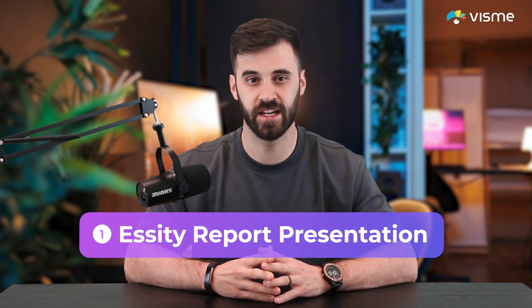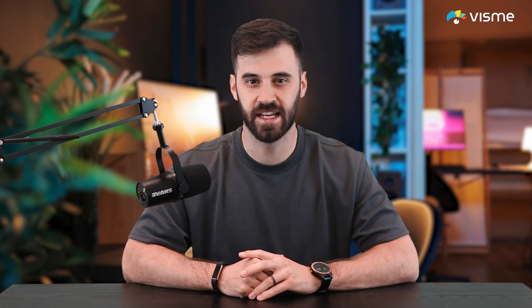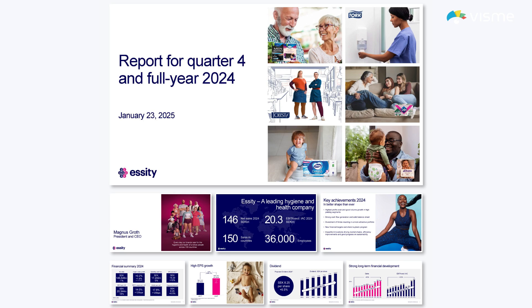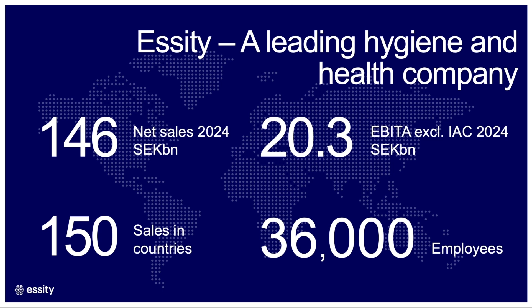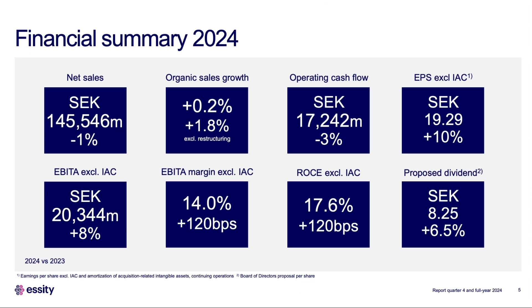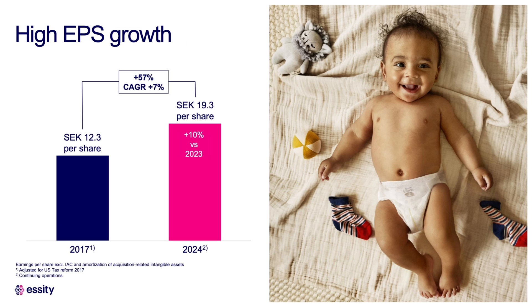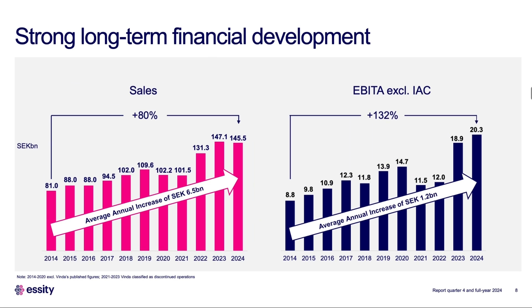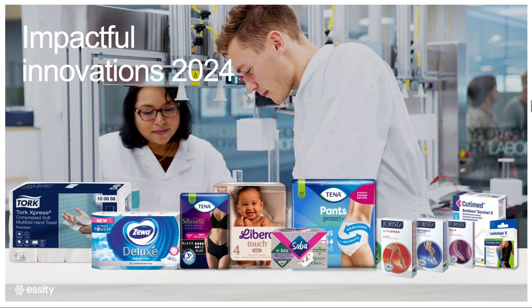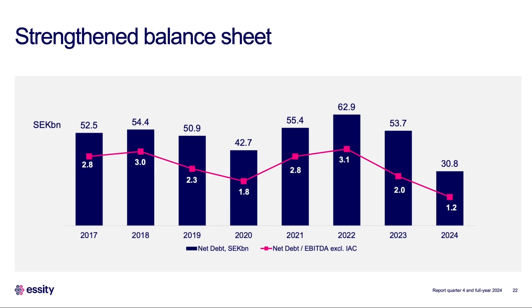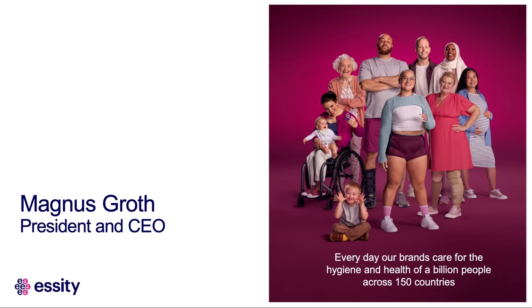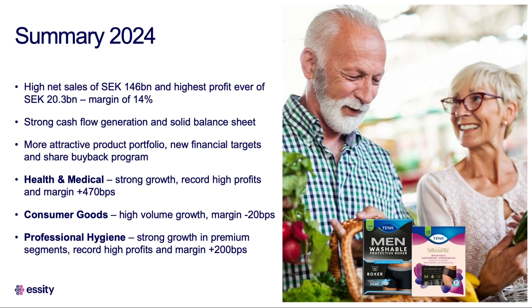Essity, a leading global hygiene and health company, created this presentation to report on their work and growth. The text follows a clear hierarchy and has good, readable sizes and sans-serif font. The blue over white has good contrast, and some slides have white text over colored blocks in photos but still maintain good contrast. The content is organized logically and flows from one idea to another using headings, subheadings, and bullet points. The images have alt text, but unfortunately they were generated by AI and are a bit off the mark.